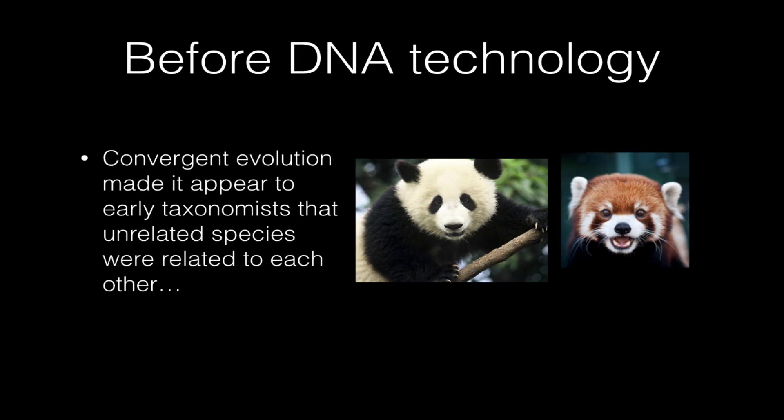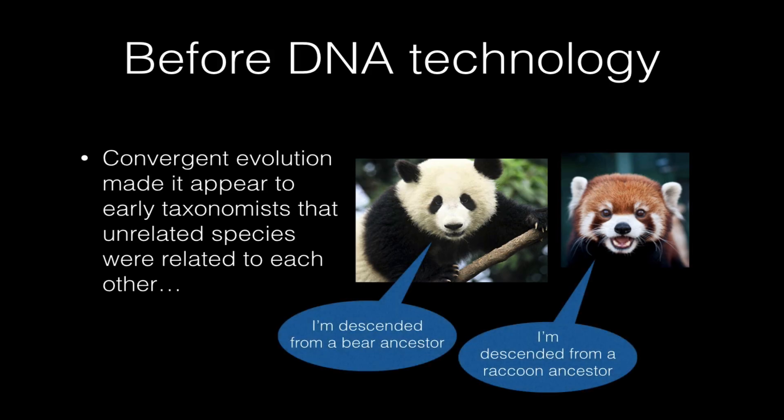So before DNA technology, convergent evolution made it appear to many early taxonomists that unrelated species were related to each other. You probably all recognize the giant panda here on the left and the red panda on the right. They're both named pandas, and they may even have been referred to as two types of bear at one point, but we now know today that the giant panda really is a bear and the red panda is actually a type of raccoon — it's in a different family of mammals.